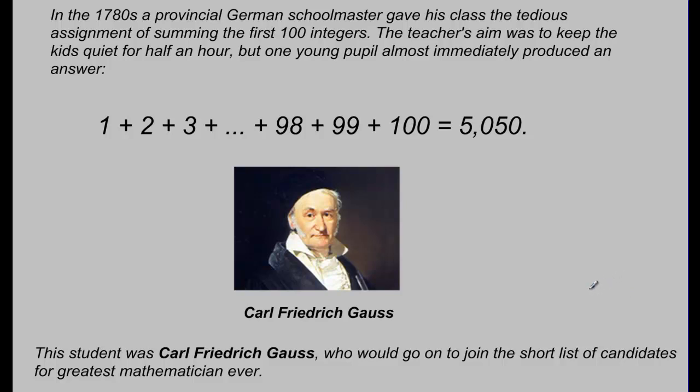His name was Carl Friedrich Gauss. And he would later join a short list of candidates for greatest mathematician ever. Now, the question is, how did Gauss come up with 5,050 so quickly?